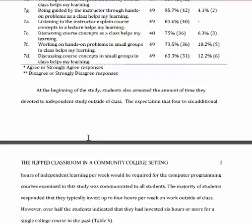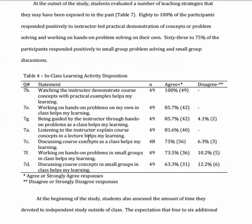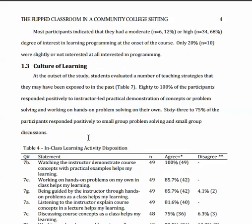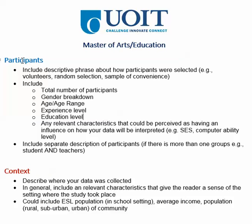That's a very long section — you don't normally get that. But the student felt they needed to describe these details so that someone looking at the data, including the student himself, could view it within a certain framework and understand the context. So those are two examples of what to include when looking at the participants and context section in a method.